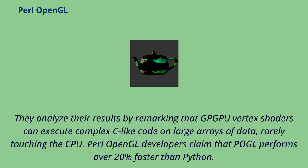They analyze their results by remarking that GPU vertex shaders can execute complex C-like code on large arrays of data, rarely touching the CPU. Perl OpenGL developers claim that Pugl performs over 20% faster than Python.